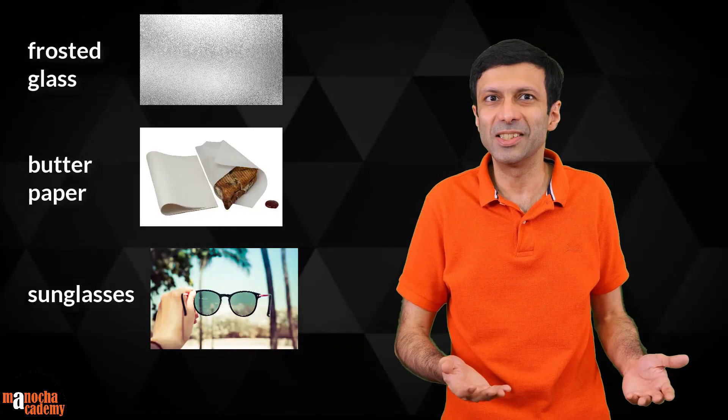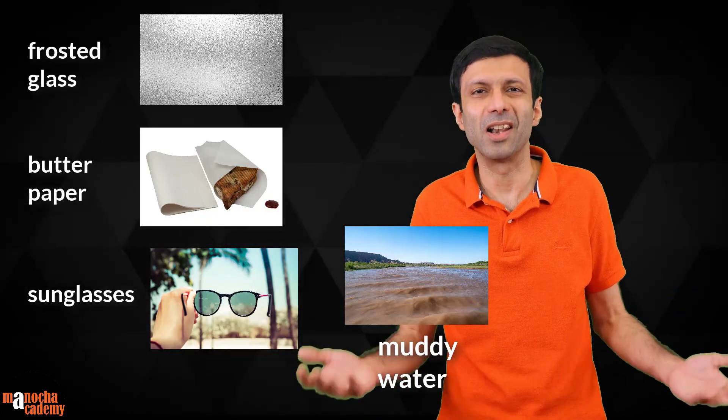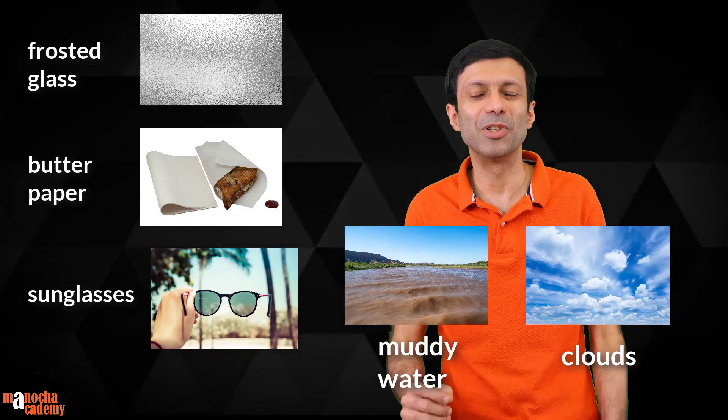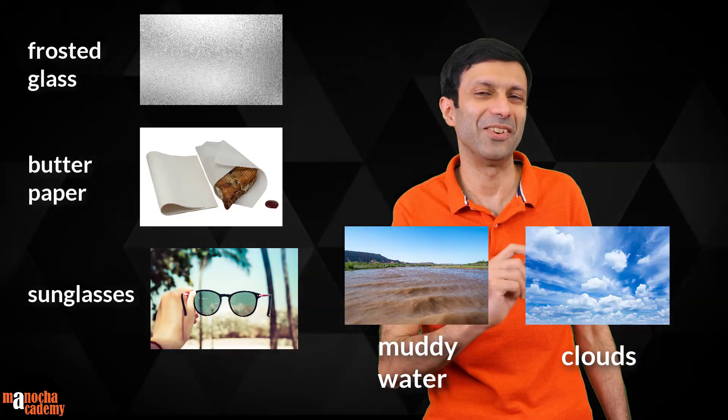They are frosted glass, butter paper, sunglasses, muddy water, and clouds. These are all examples of translucent materials.